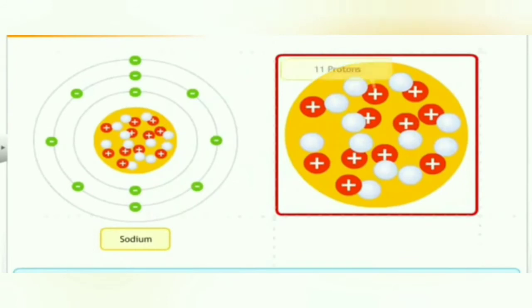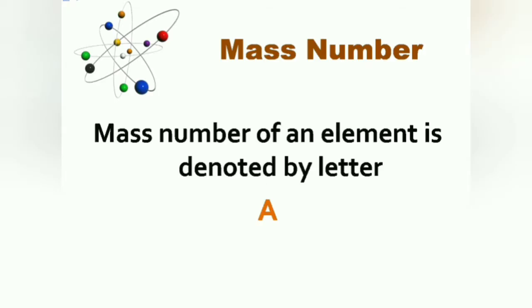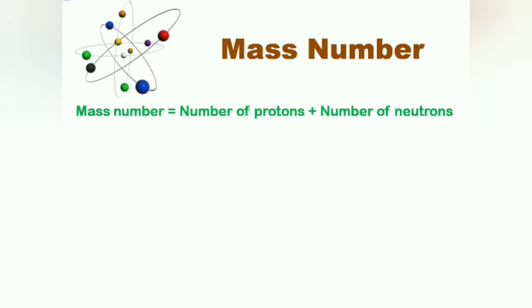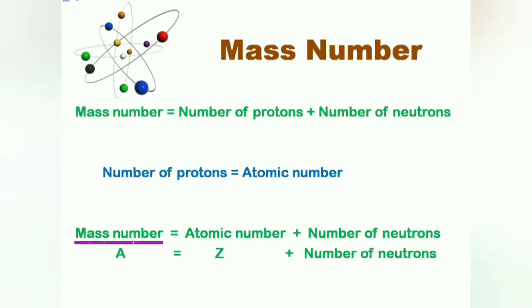For example, an atom of sodium contains 11 protons and 12 neutrons, so the mass number of sodium is 11 plus 12, which equals 23. The mass number of an atom is denoted by the letter A. Mass number equals the number of protons plus the number of neutrons. Since the number of protons equals the atomic number, this can also be written as: mass number equals atomic number plus the number of neutrons.